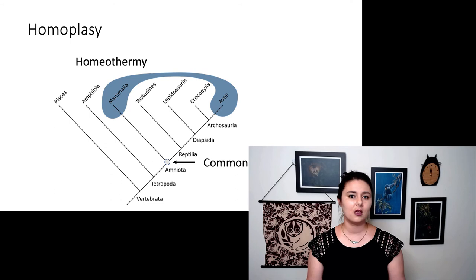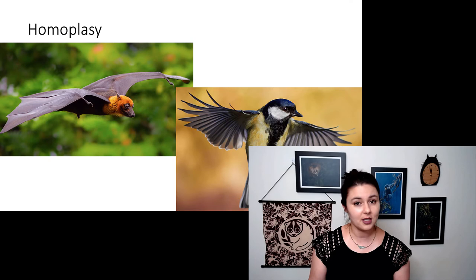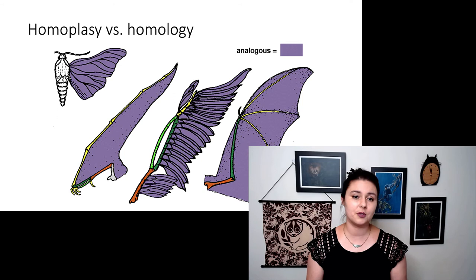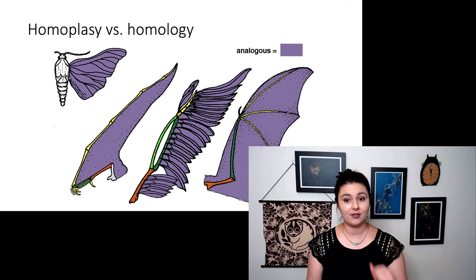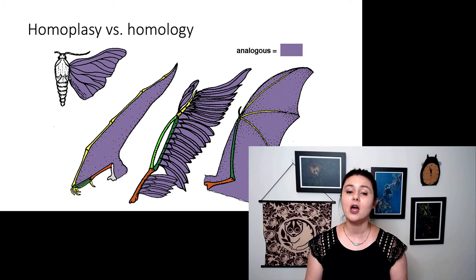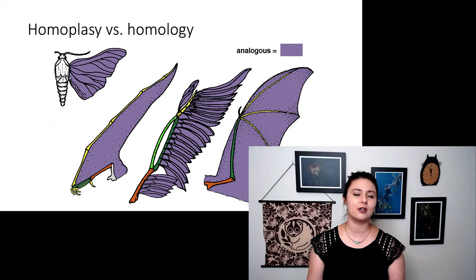We can also see homoplasy in a variety of other traits. Birds and bats independently evolved flight. You can look at that a little bit farther. This is an interesting graph where everything that is purple is analogous. So wings are analogous between these different creatures: insects, a pterodactyl, a bird, and a bat. All of them evolved flight independently. Though you might notice, we have the four limb bones on the three at the bottom. Those bones are still homologous. So you do want to make sure you're careful about how you're using these words.